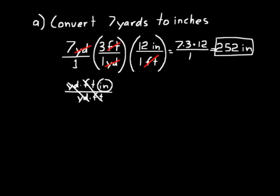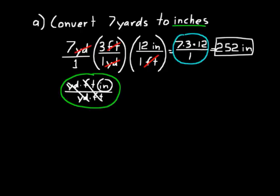For the numerical part: 7 times 3 times 12 over 1, which gives 21 times 12 equals 252. So there are 252 inches in 7 yards. Think about whether your answer makes sense — there are 36 inches in a yard, and you have 7 of them, so a large number makes sense. Make sure your unit multipliers are set up so that units cancel and give you the unit you're looking for.